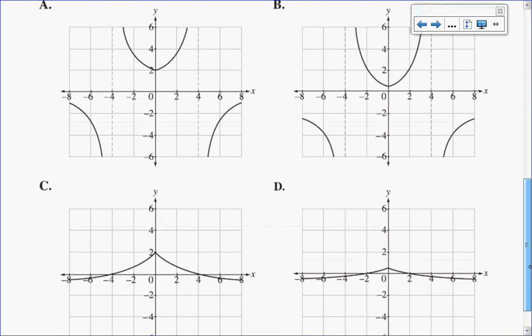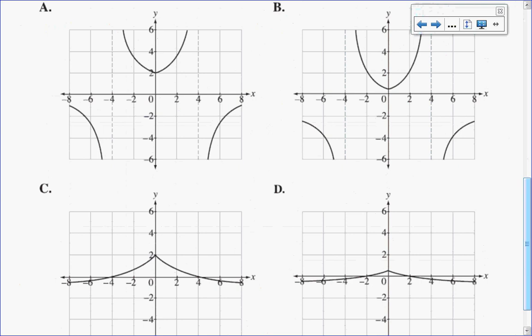So if I come down here to my graphs, looking at these graphs here, I see that C and D do not have a vertical asymptote. So those can't be the options. Now, A and B both have vertical asymptotes at negative 4 and at positive 4. So it could be either one of these options.